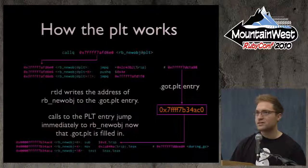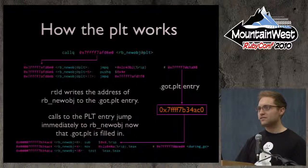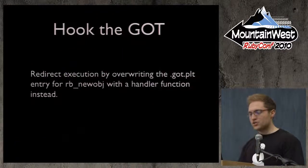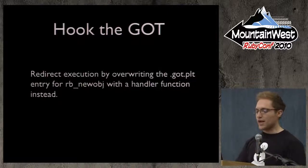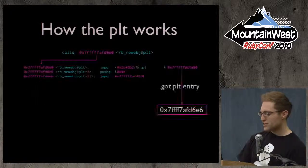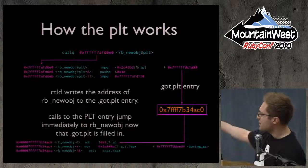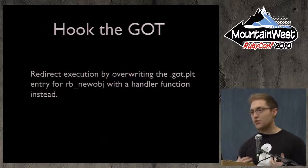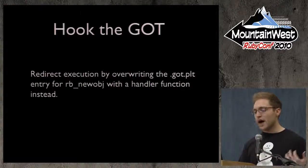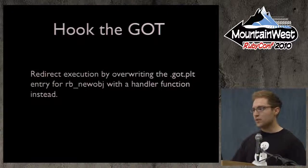We hook the global offset table by redirecting execution — we overwrite that GOT.PLT entry so instead of rb_newobj, we call our handler function. We just pretend we are the runtime dynamic linker: go in, find the table, and write the address for our function in there instead, completely bypassing the runtime dynamic linker. So the PLT entry now directly refers to our handler, which calls rb_newobj, does some tracking, and returns the result.